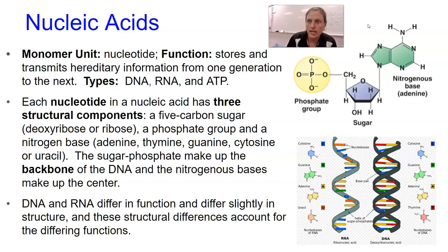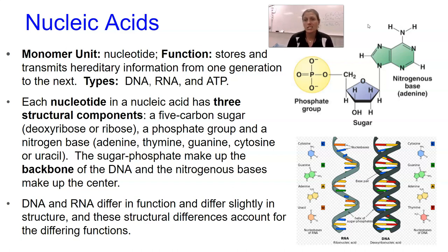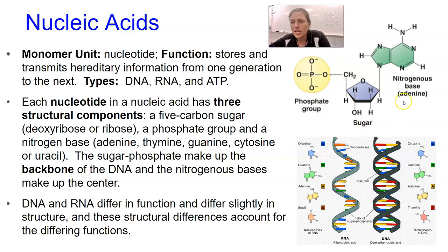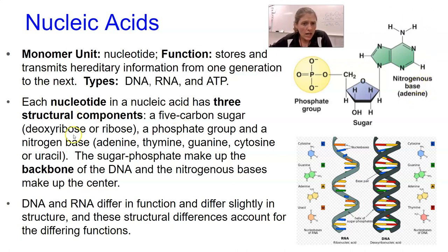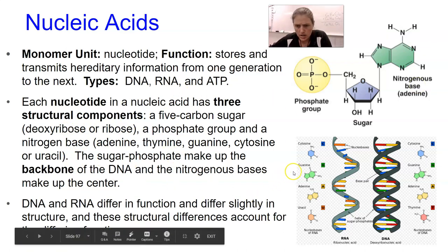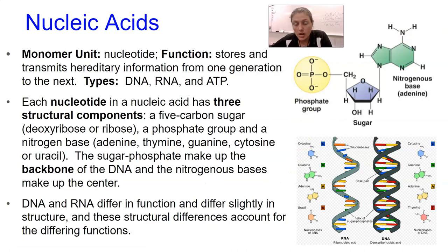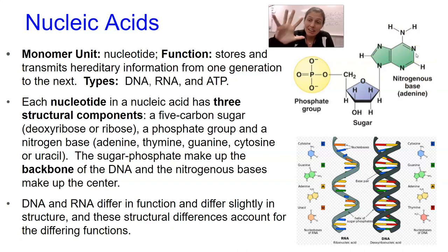ATP is a nucleic acid. Each nucleotide in a nucleic acid has three particular structural units - we actually covered this in our nucleic dehydration synthesis lab. There is a phosphate group, there is a sugar group - which can be deoxyribose, making it DNA, or regular ribose, making it RNA - and then there is a nitrogen base. These three components make up the base of a nucleic acid, which is a nucleotide. The monomer is a nucleotide.